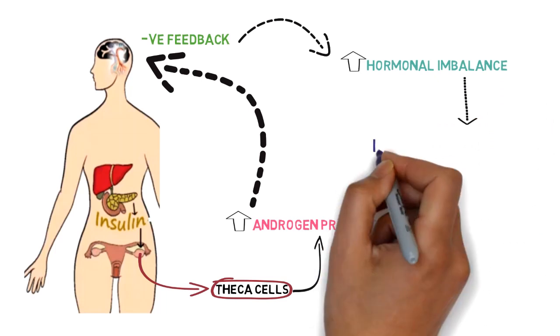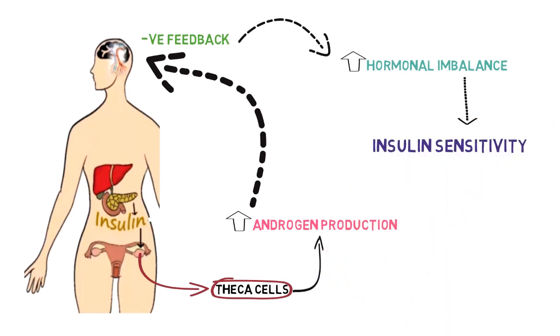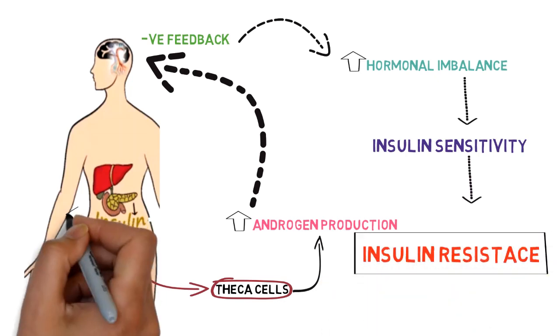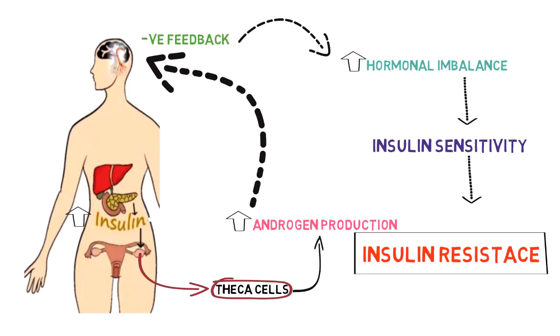This may lead to ovulatory difficulty and insulin sensitivity, making the person insulin resistant, which further stimulates the theca cells of the ovaries causing more increase in the androgen production.